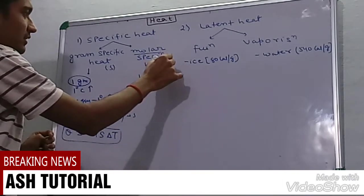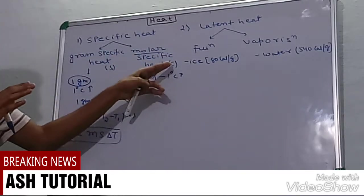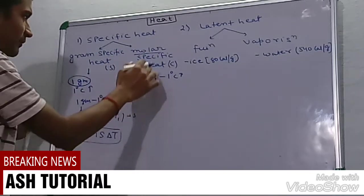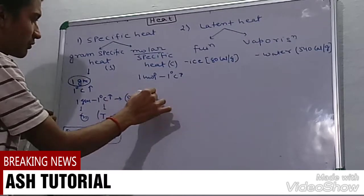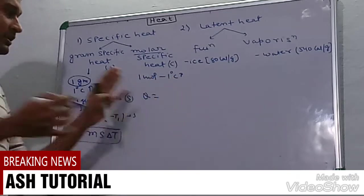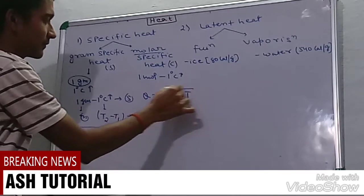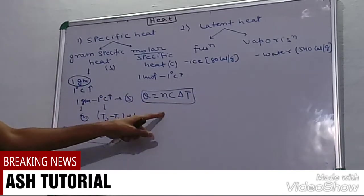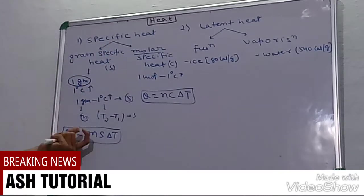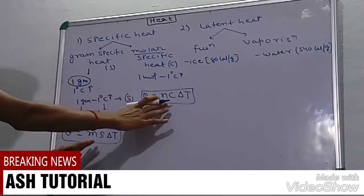Calculating the same way, heat required to raise n moles of substance through delta t degree will be n multiply by c into delta t. Use this formula when moles are given in question, and use ms when mass is given. Don't mug up, go by concept.